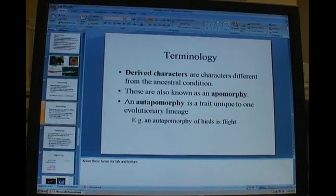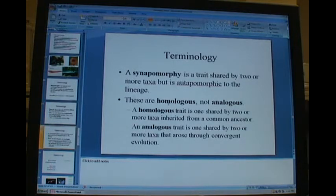If the trait is derived, so it has changed relative to the ancestor, then they're called apomorphies. If that apomorphy is unique to a lineage, so if you had a tree and it was unique, like no other lineage on your tree had it, it's called an autapomorphy.